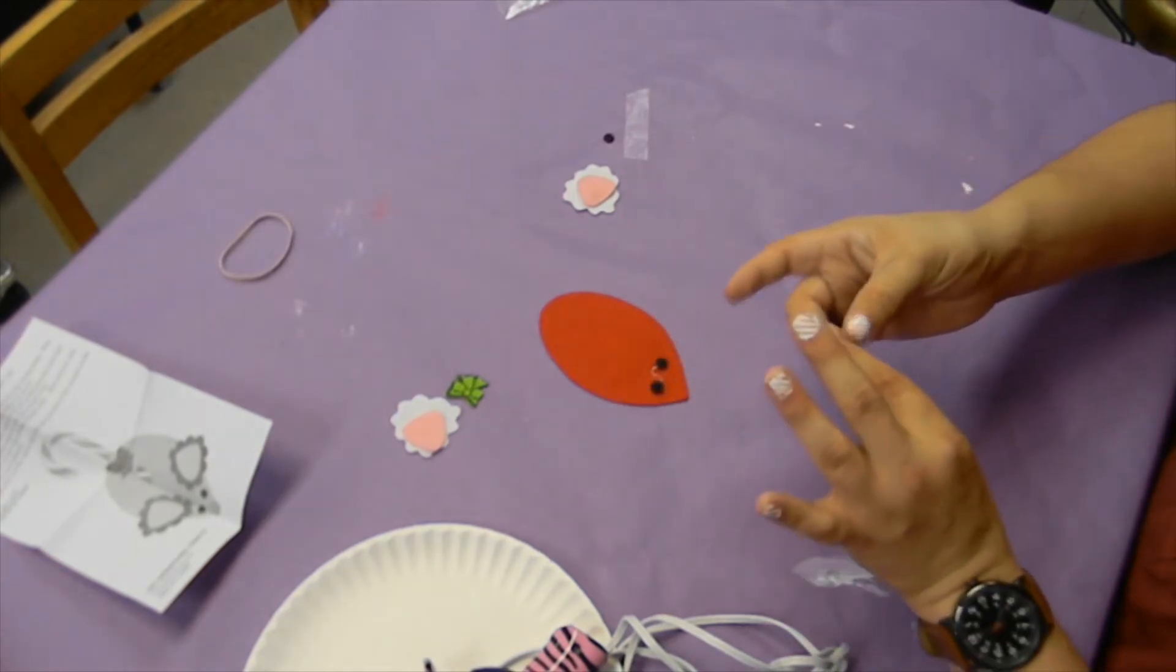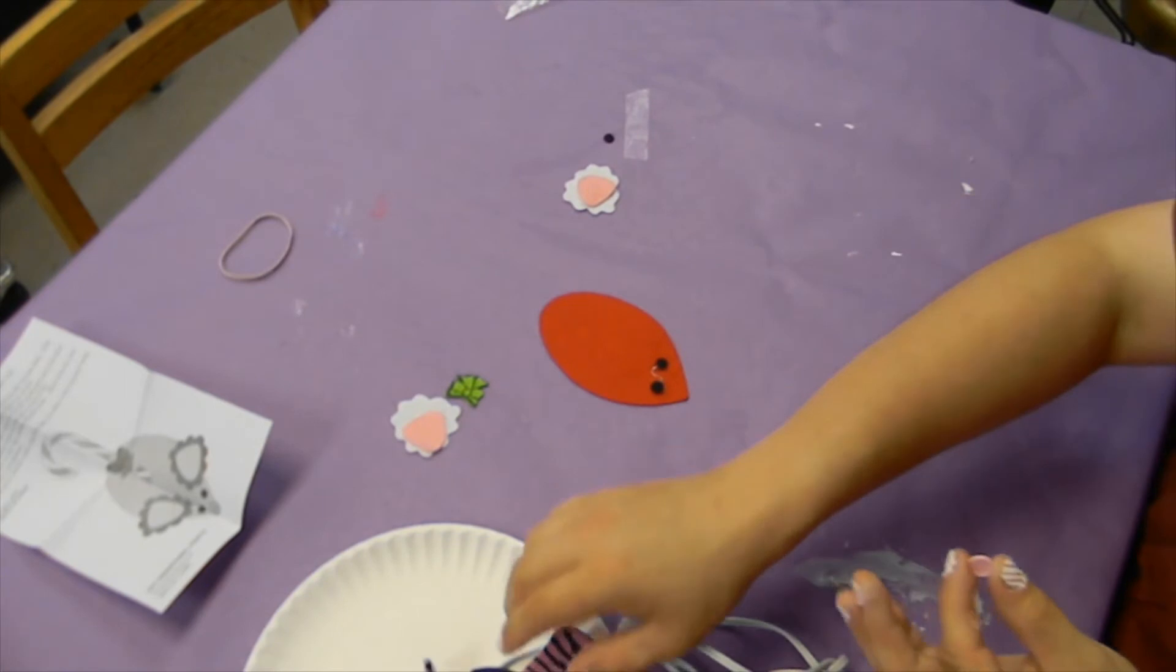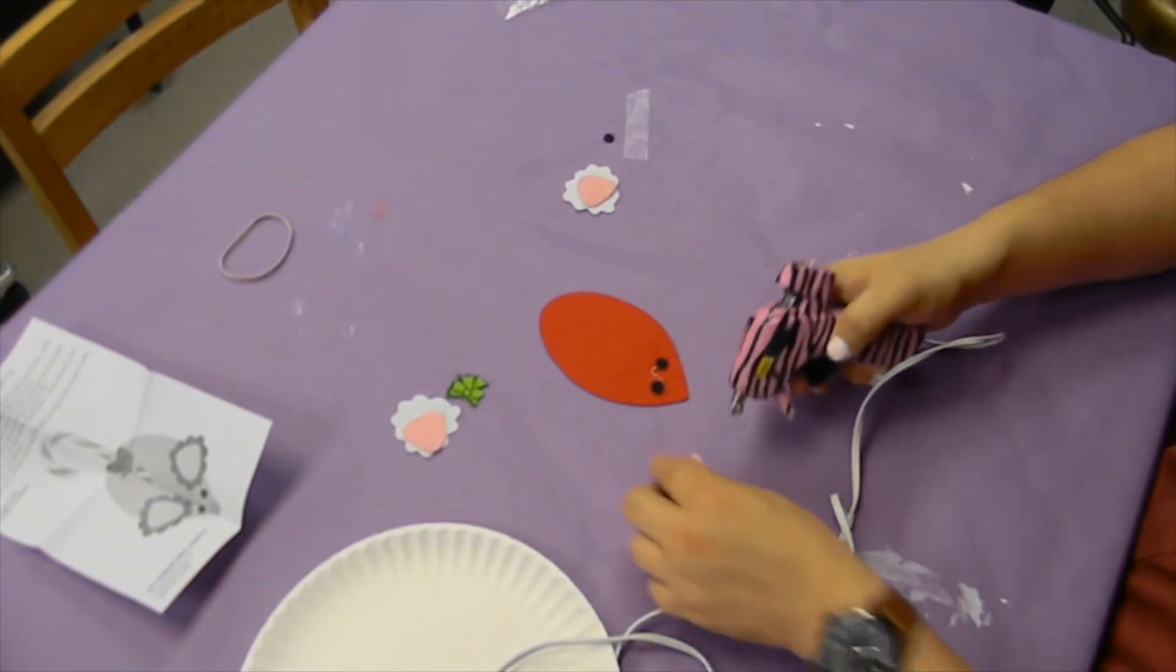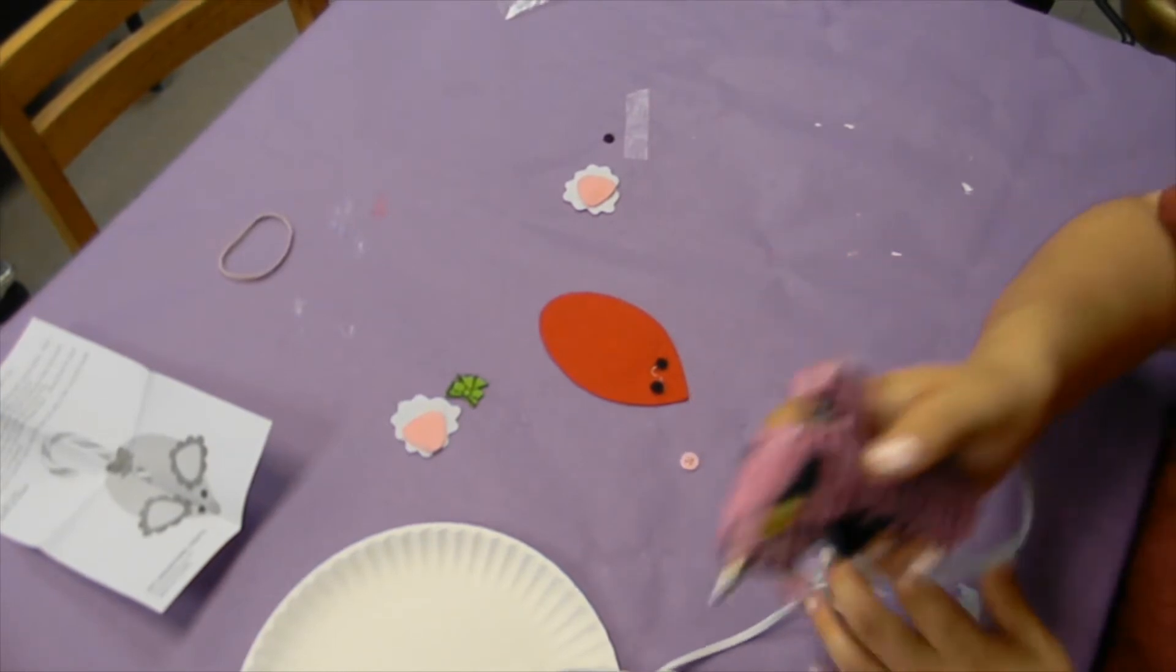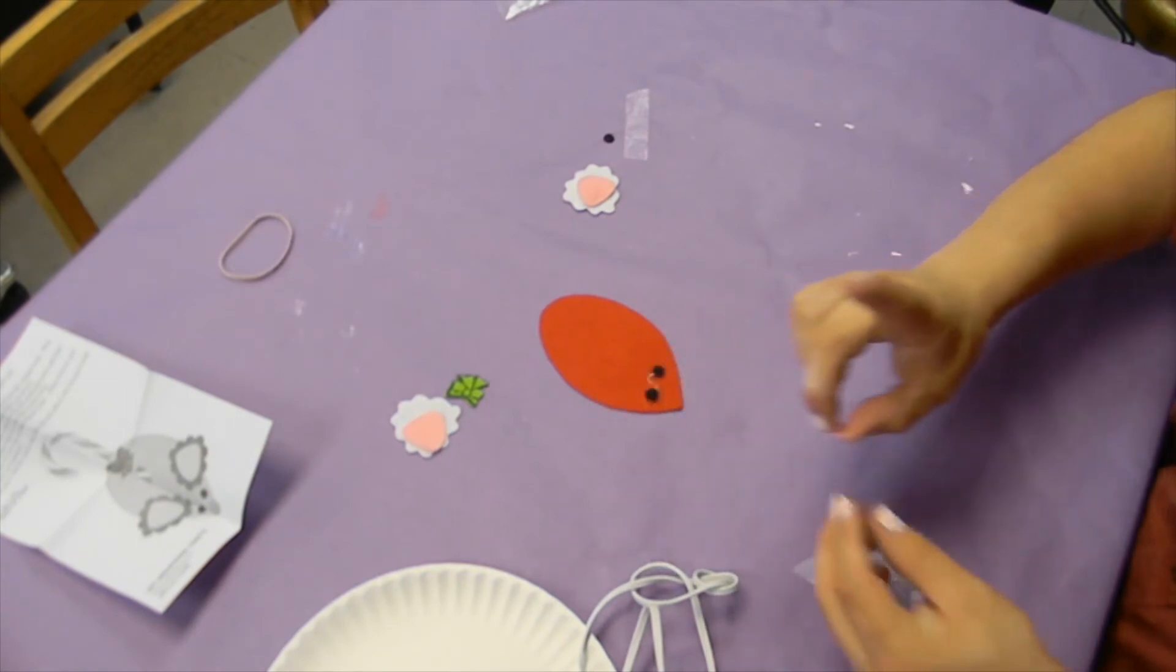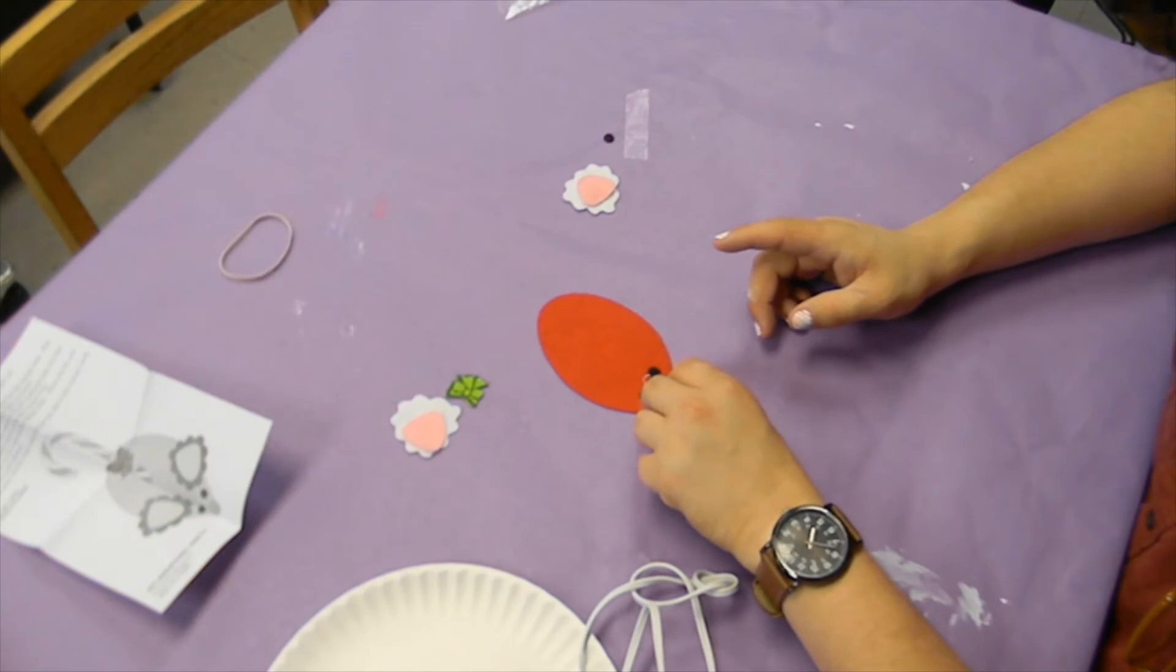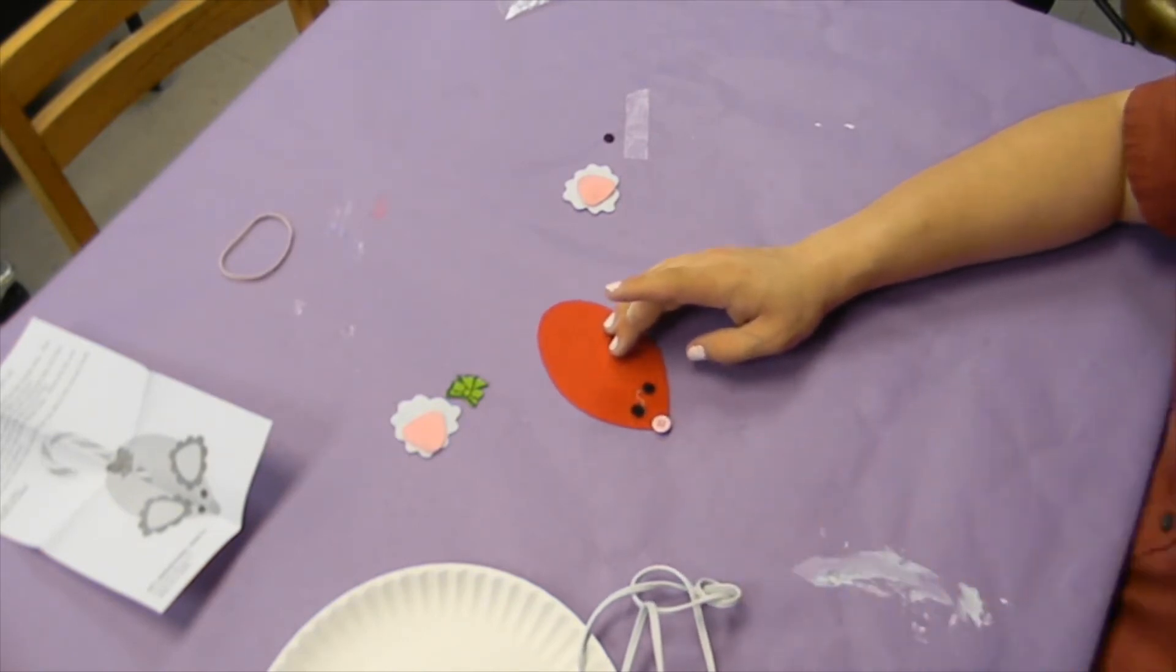You're going to take this little button, and it is going to be the nose. So to do that, you're going to put some glue on the button. And you're going to glue it over at the very edge.